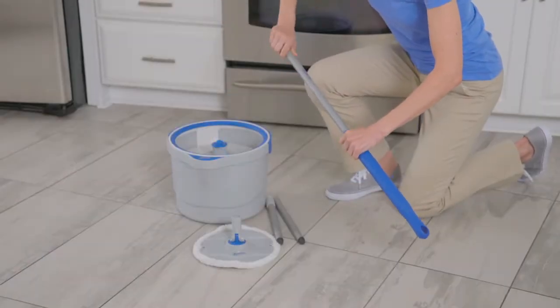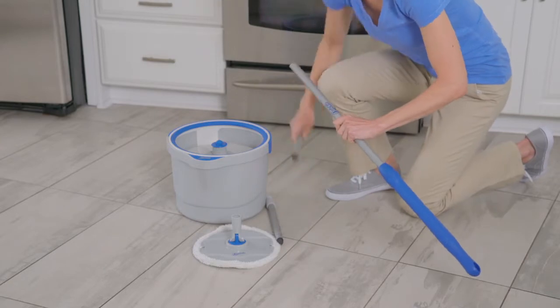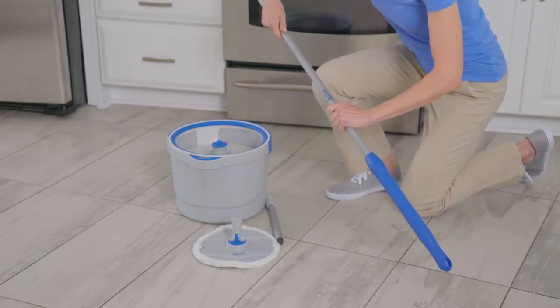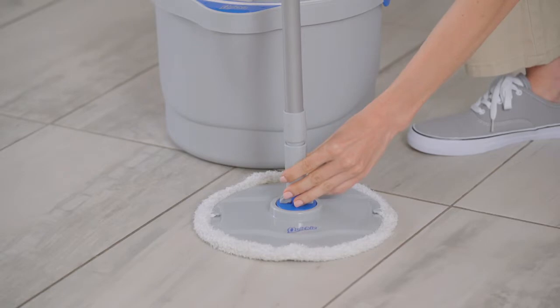Now, assemble the mop by tightly twisting each metal pole segment into the blue handle. Next, screw the rubber tipped end of the handle into the mop head until secure.